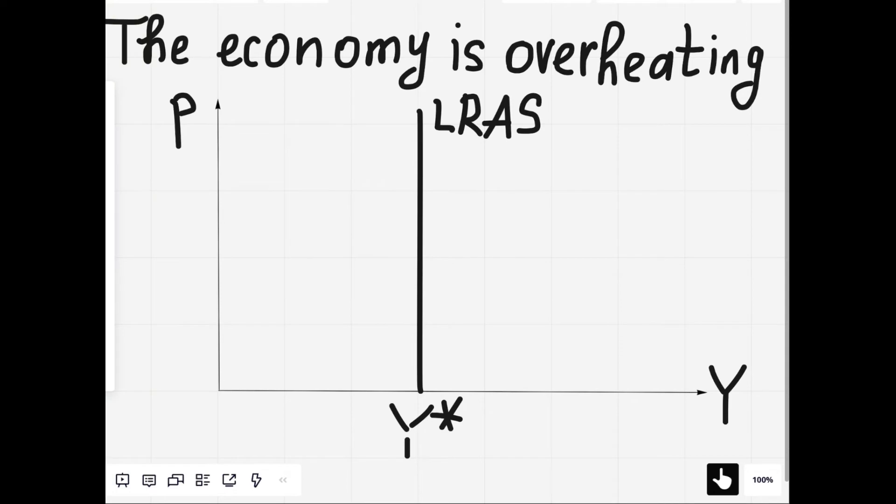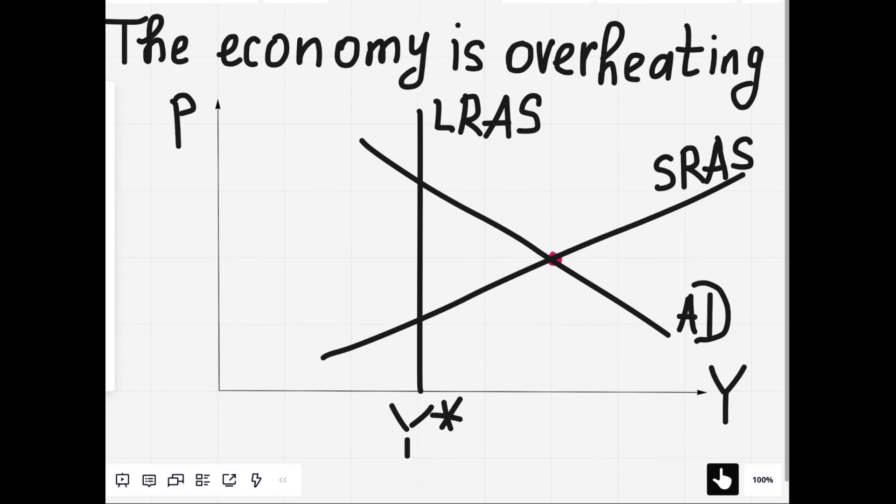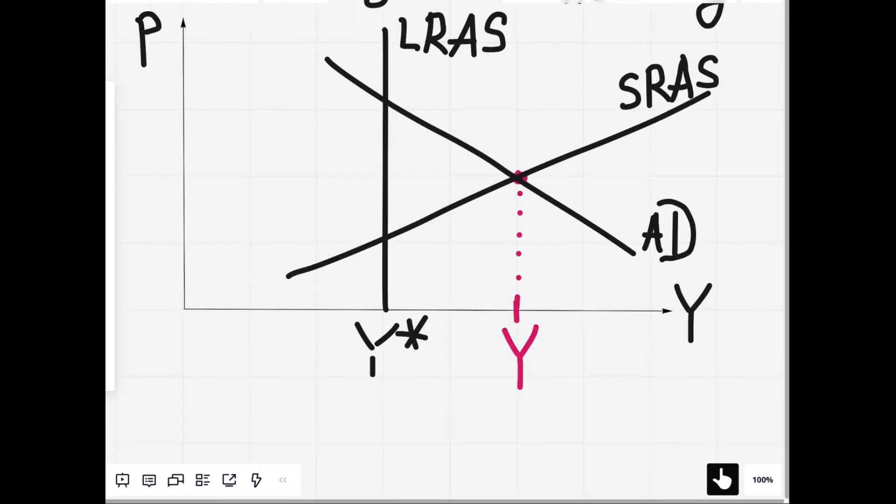If the economy is overheating, it's on the right of the long-run aggregate supply. It produces more than the potential output. And this difference, the current GDP minus the potential GDP, is called an inflationary gap.